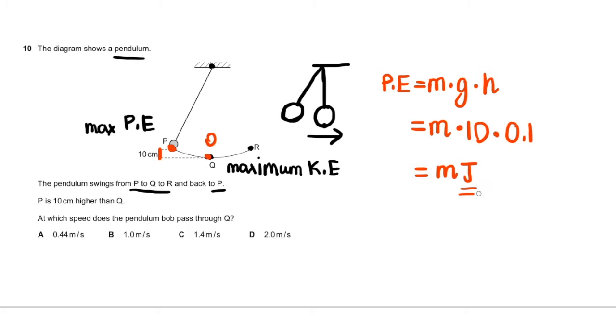Now what you know is that at P, all of its energy is potential energy, 100%, and at Q, all of its energy is kinetic energy, 100%. That means all of this potential energy M is being converted to kinetic energy. So we just rewrite this.